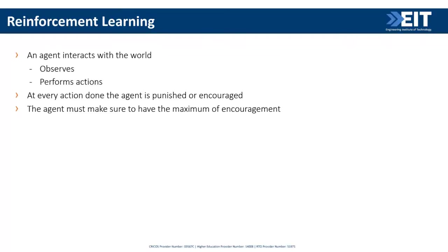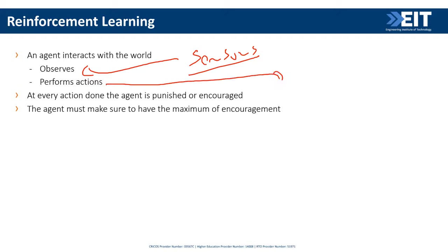In reinforcement learning, an agent observes the world through sensors and acts through actuators. It tries to maximize its encouragement: the environment punishes or rewards certain actions, and the agent learns to maximize rewards through interaction.